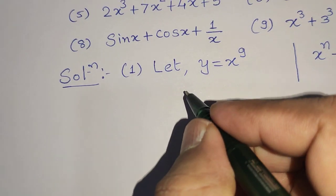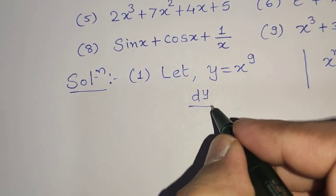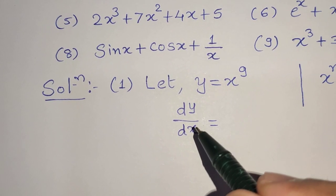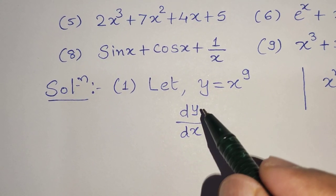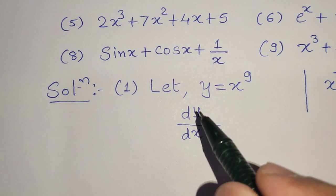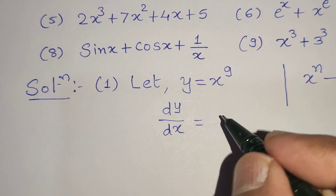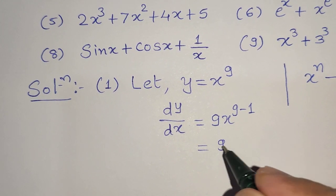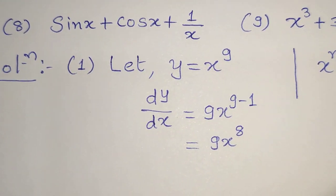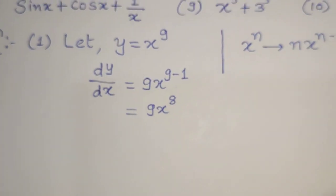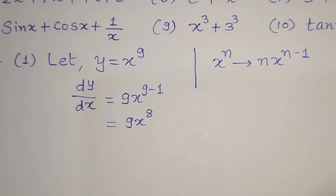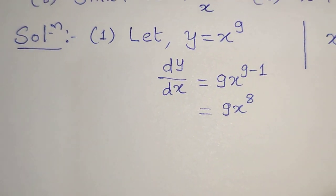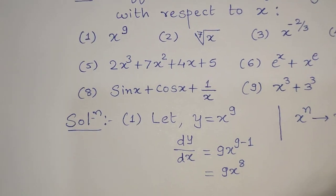The symbol is dy by dx. So dy by dx equals 9x raised to 9 minus 1. Since 9 minus 1 is 8, the answer is 9x raised to 8. It is a very simple example — by the formula, the derivative of x raised to n is n times x raised to n minus 1, giving 9x raised to 8.